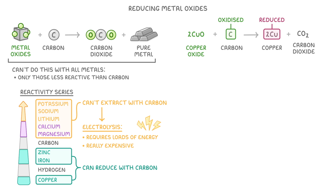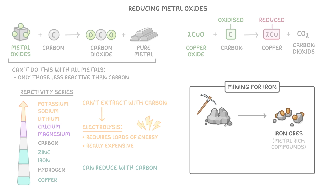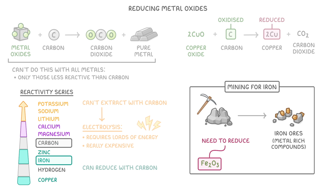As a last example of using carbon, let's imagine that we were mining for iron. As we take the rock from the ground and separate out the bits that contain iron, we'd find that we have lots of different iron ores — with ores referring to metal-rich compounds that we can extract our metal from. The most common ore will be Fe2O3, which is a type of iron oxide. So to isolate the pure iron, we need to reduce this iron oxide to just iron. If we check our reactivity series, we can see that iron is less reactive than carbon.